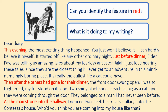Then, after the others had gone for their dinner, the front door swung open. I was so frightened, my fur stood on its end. Two shiny black shoes, each as big as a cat, and they were coming through the door. They belonged to a man I'd never seen before. As the man strode into the hallway, I noticed two sleek black cats stalking into the Contessa's house. Who do you think you are coming into my house like that?